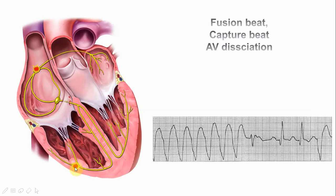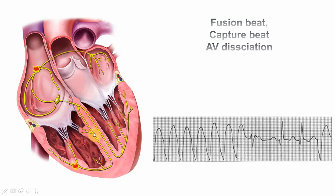In VT, the cardiac impulse is generated within the ventricle — it may be from various foci, but usually a single focus, which is why it's called monomorphic ventricular tachycardia. The impulse remains within the ventricle and does not travel to the atria. This creates what we call atrioventricular (AV) dissociation: the atrial activity remains within the atria and the ventricular activity remains within the ventricle, with no association between them. AV dissociation is very specific for ventricular tachycardia.